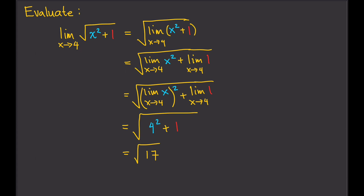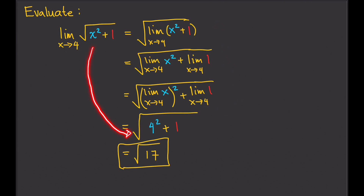So the limit of the square root of x squared plus 1 as x approaches 4 is the square root of 17. Again, as you can see, we don't have to go through all those steps — we can take a shortcut by simply replacing x with 4. If this detailed breakdown is not required, you don't have to show it; but that's why you still have to learn it, in case it is required. Thank you.